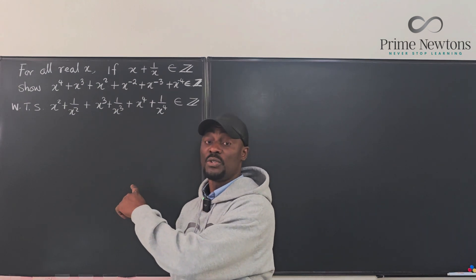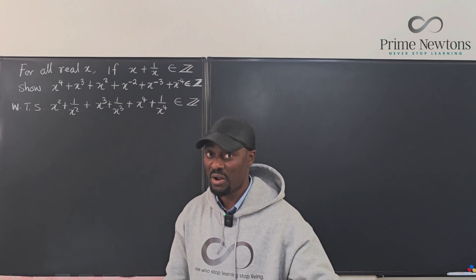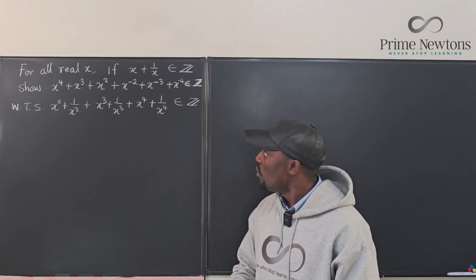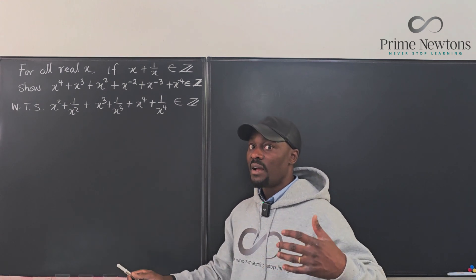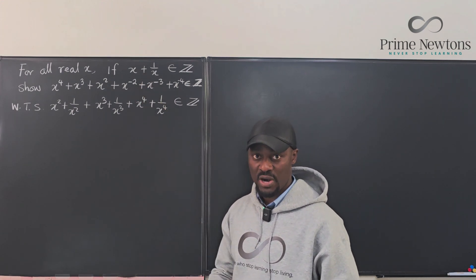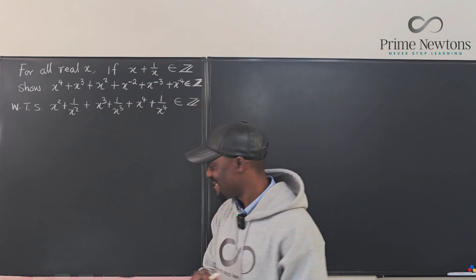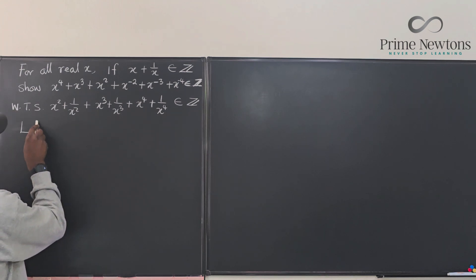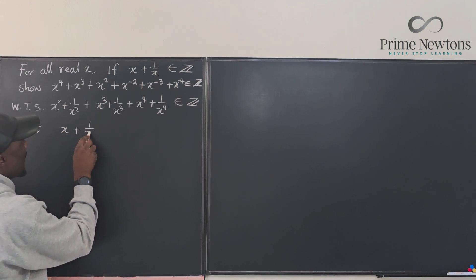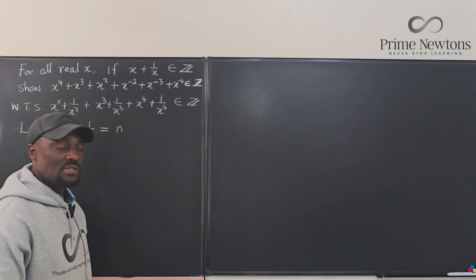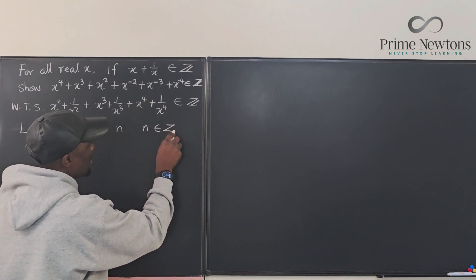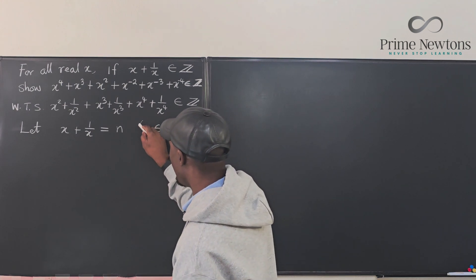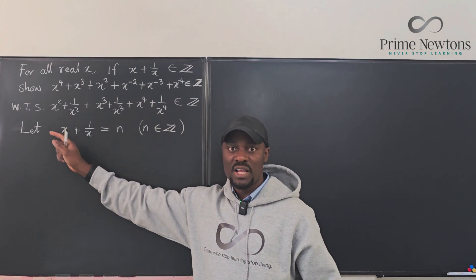This is a good tool if you're doing competition or Olympiad problems — this type of expression usually shows up. Now, what should we do from here? We'll have to take each of these combinations and write them in terms of x plus 1 over x. Let x plus 1 over x equal n, where n is some integer. So instead of writing x plus 1 over x multiple times, we just write it as n.